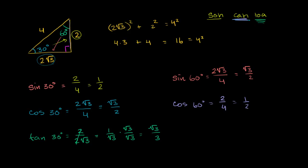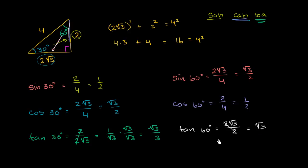Finally, the tangent of 60°: tangent is opposite over adjacent. The opposite to 60° is 2√3 and the adjacent is 2. So tangent of 60° = 2√3/2 = √3. Notice: sine of 30° equals cosine of 60°, and cosine of 30° equals sine of 60°. These are complementary relationships. We'll keep extending this and give a lot more practice in the next few videos.